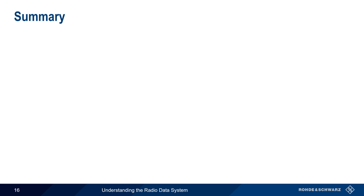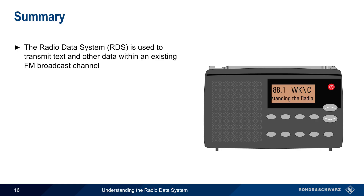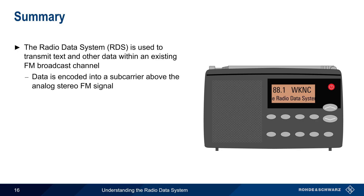Let's end with a brief summary. The radio data system is a technology used to transmit textual and other information to a receiver within an existing FM broadcast channel. This data is encoded into a special subcarrier located just above the analog FM stereo signal.